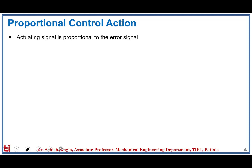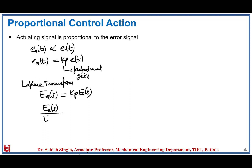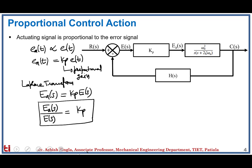Next we discuss proportional control action, where the actuating signal is proportional to the error signal — E_a(t) is proportional to E(t). To remove the proportionality constant, we introduce a constant KP, called the proportional gain. Taking the Laplace transform, E_a(s) = KP · E(s), and the transfer function of the controller, output by input, equals KP. In the block diagram, KP is the gain of the proportional controller.